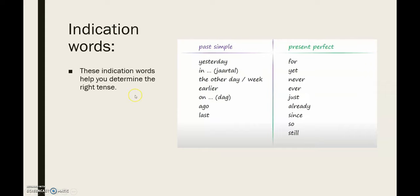There are some indication words. If you find it difficult to understand if anything still lasts now, these indication words can help you. You can study them by heart if you find it difficult to decide which tense is the correct one. Deze woordjes — als deze in een zin voorkomen, verwijzen die bijna altijd naar een van de twee tijden. Je kan dit van buiten studeren als je het moeilijk vindt om exact te weten welke tijd je moet gebruiken.